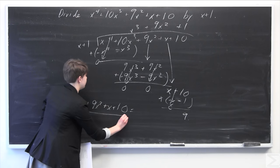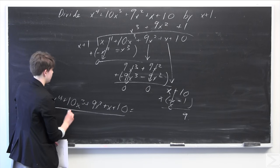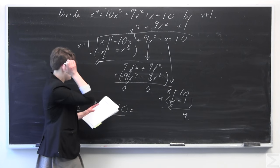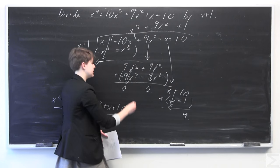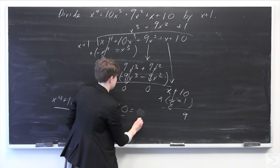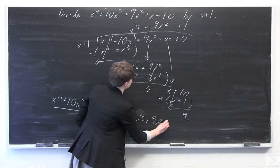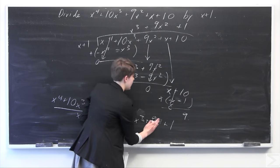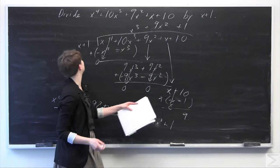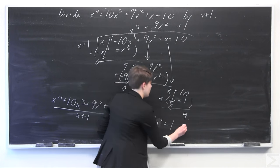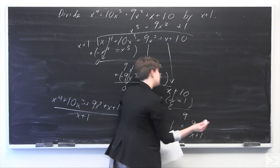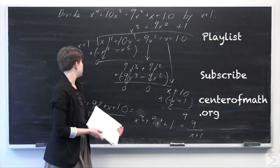Divided by x plus 1 is going to be equal to what we have up here, which is x cubed. Let's write this down here a little bit. x cubed plus 9x squared plus 1. And we have our remainder 9 all over x plus 1. 9 remainder all over x plus 1. And that solves our problem here.